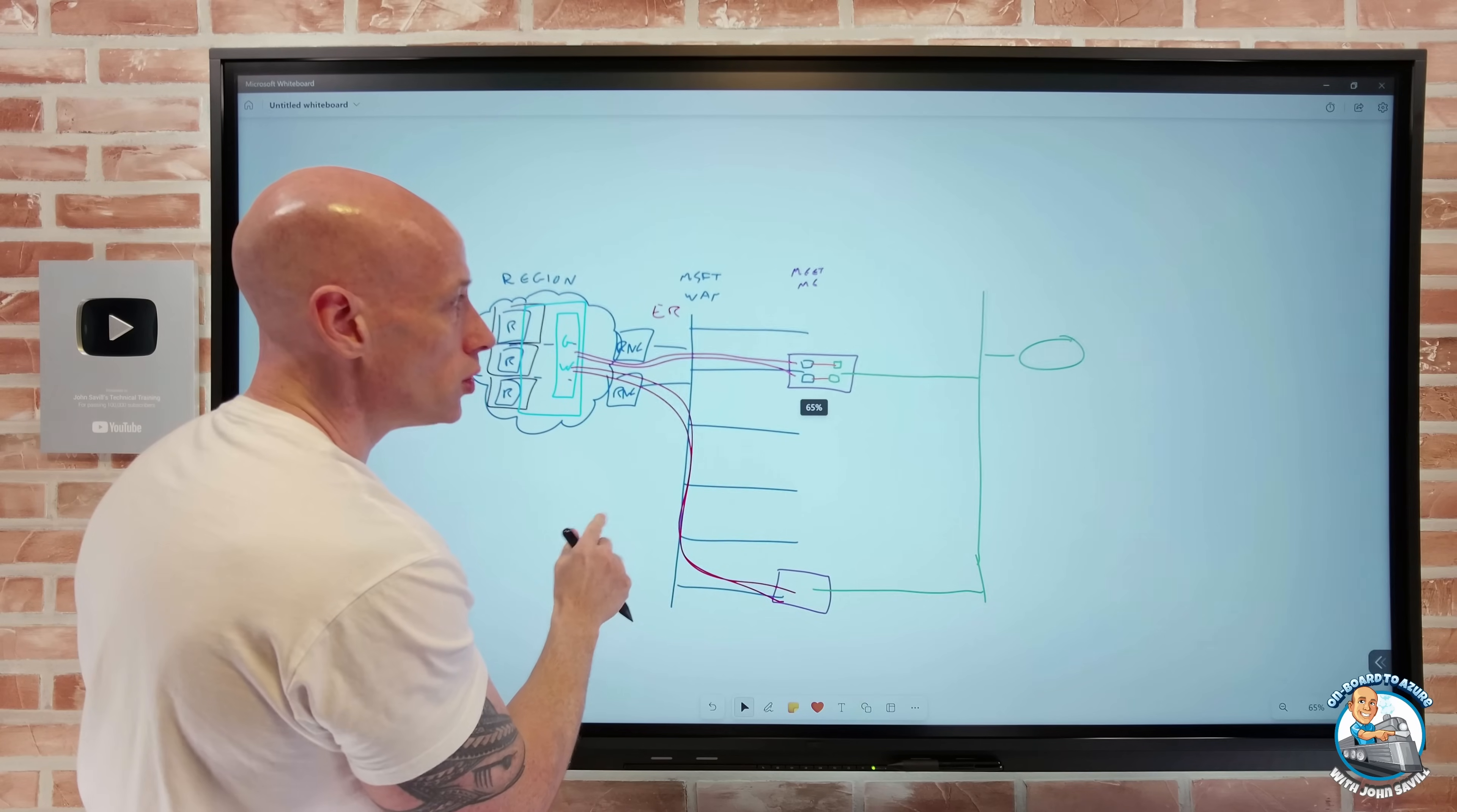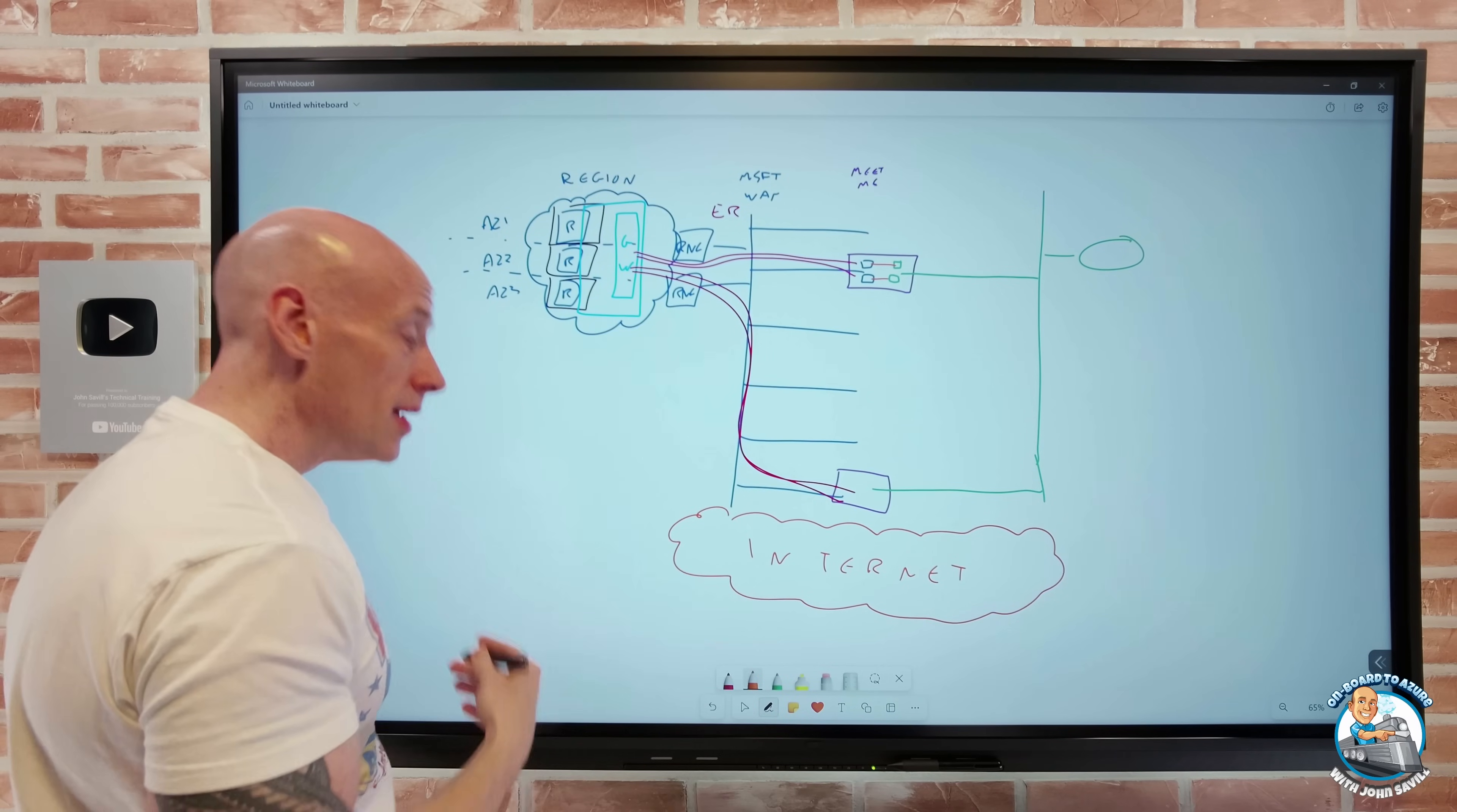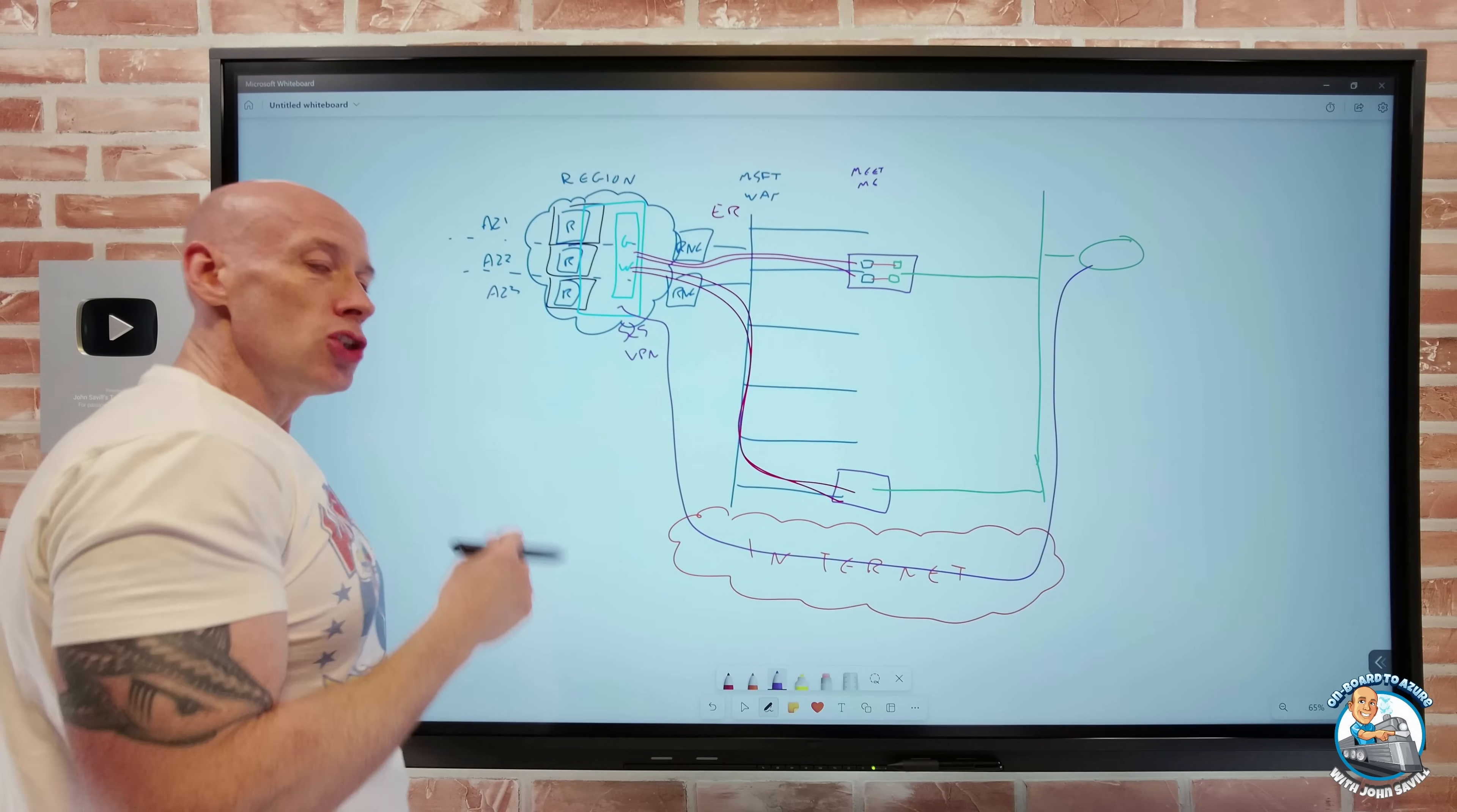Now, another option you could do for that backup connection is you might also say, well, hey, look, there's the internet that you're also connected to. So another option is, hey, you could put in place, for example, a site-to-site VPN as the backup. So you have a different gateway. But now you could also get a connection as a backup that way. So you have choices.